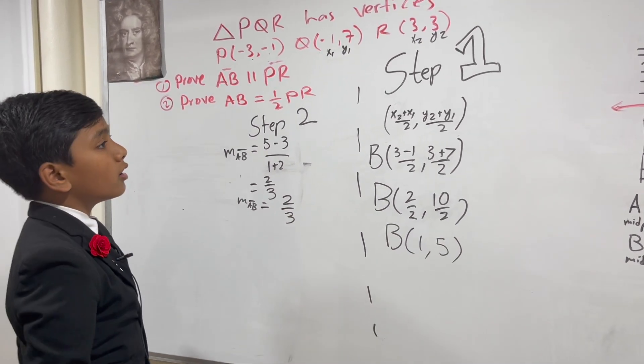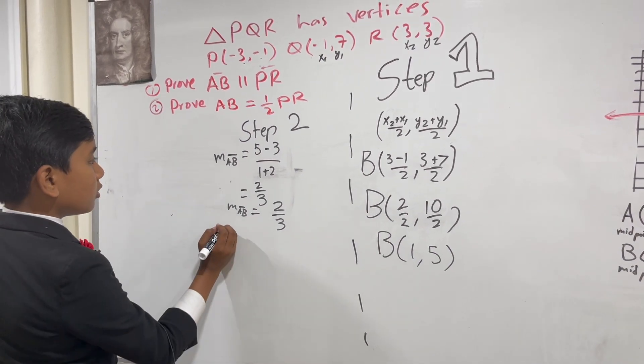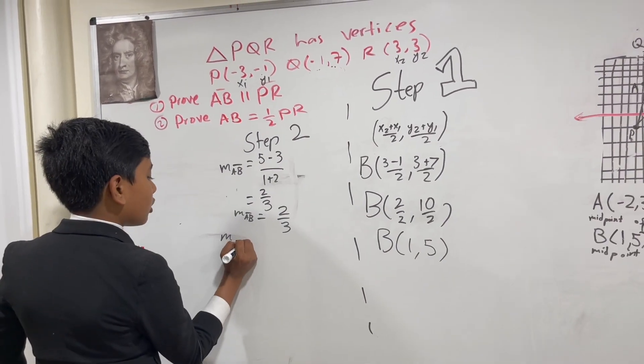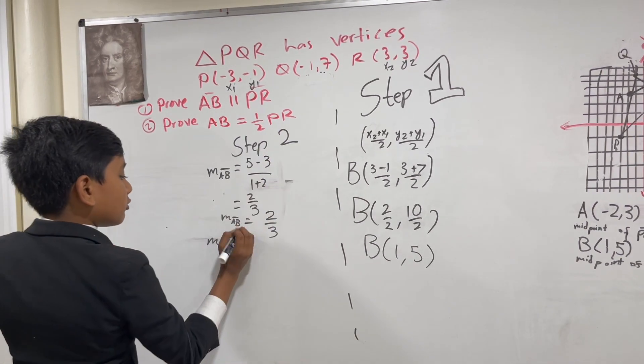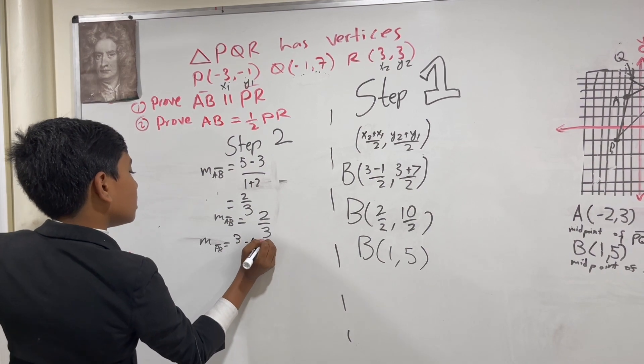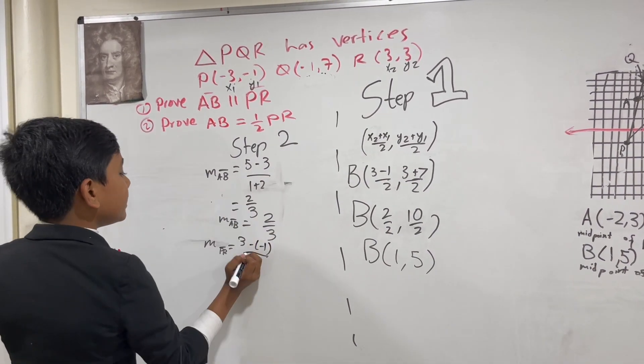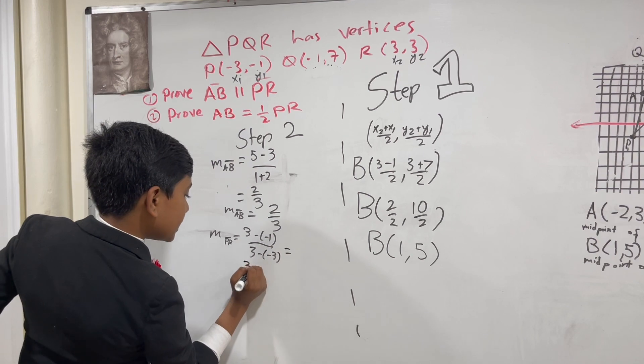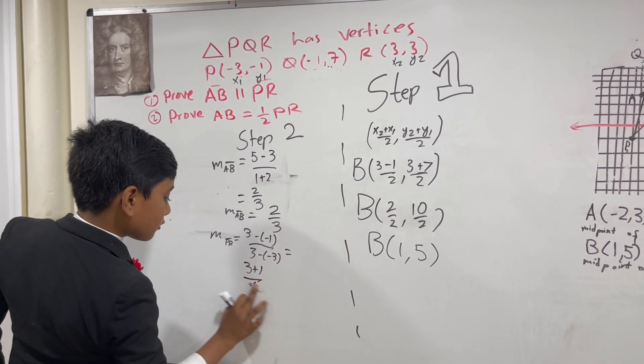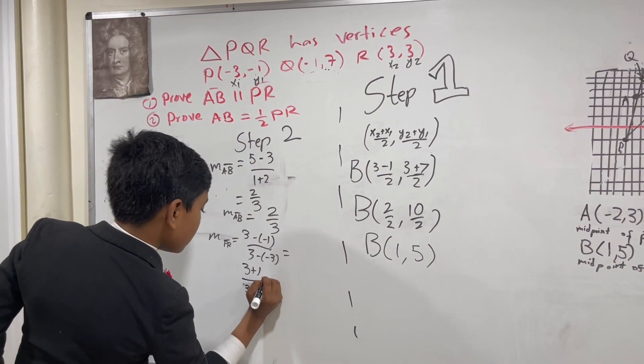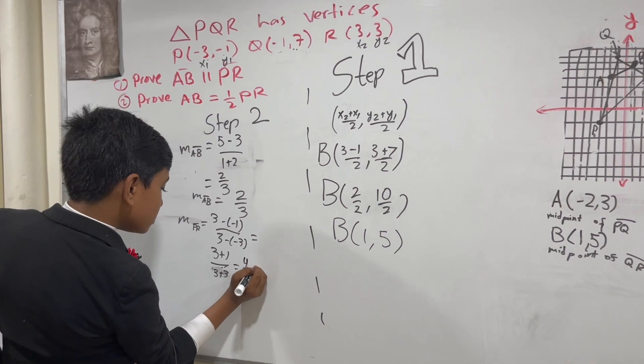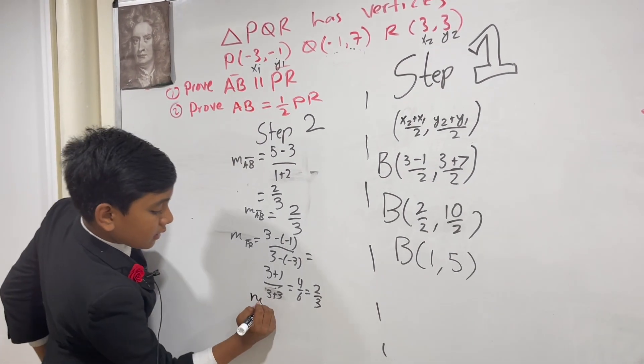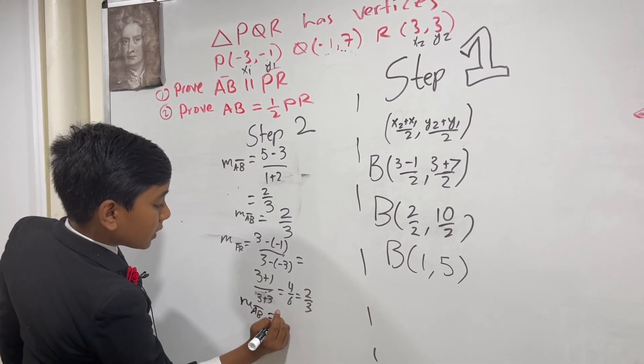But is this the same one for PR? We're going to term R as coordinate 2. The slope of PR equals Y2 is 3, Y1 is negative 1, over X2 is 3, and X1 is negative 3. This is 3 plus 1, that is 4. Or 3 plus 3 is 6, which gives you 4 over 6, which can be simplified into 2 over 3. So now we've proven that these two are parallel because their slopes are equivalent.